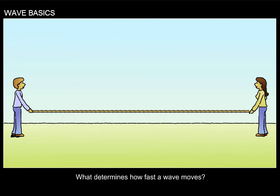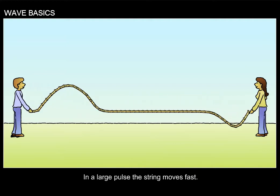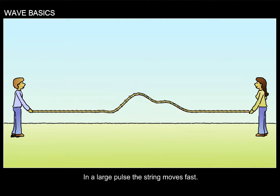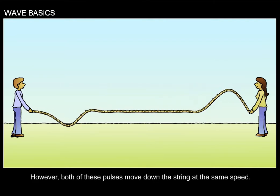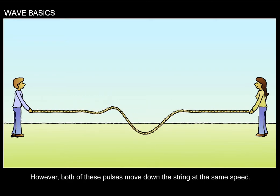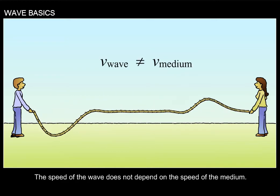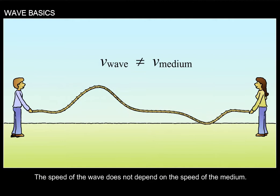What determines how fast a wave moves? In a small pulse, the string itself moves slowly. In a large pulse, the string moves fast. However, both of these pulses move down the string at the same speed. The speed of the wave does not depend on the speed of the medium.